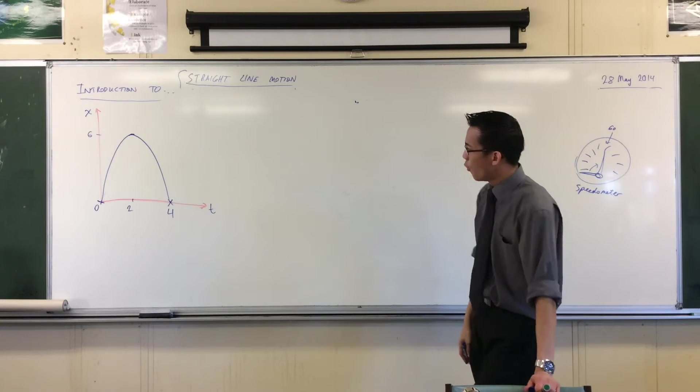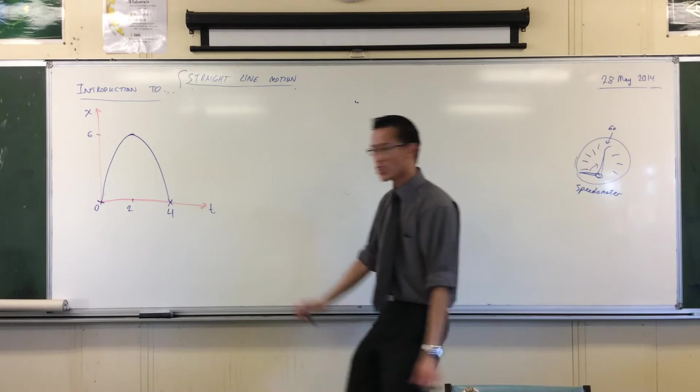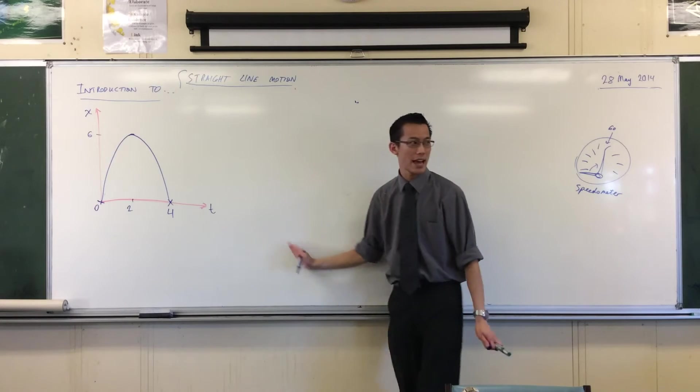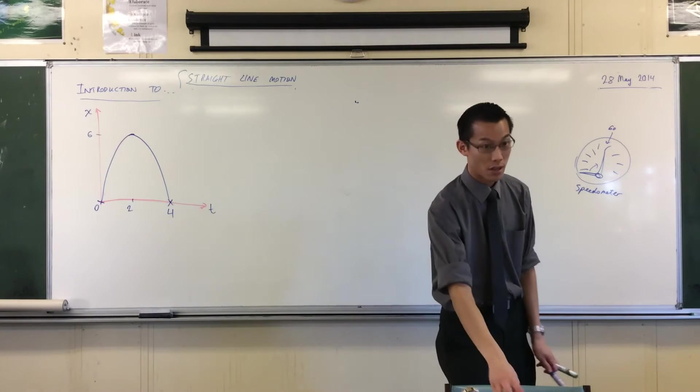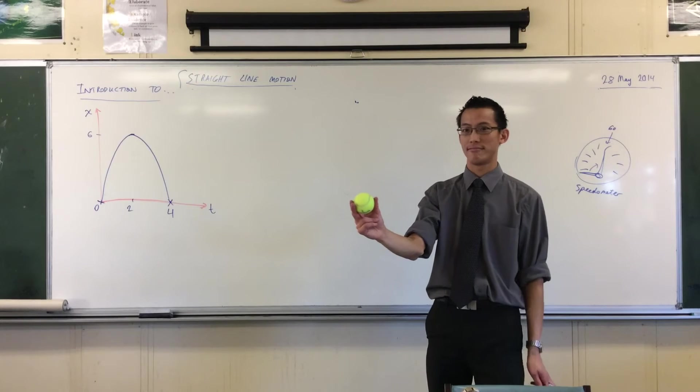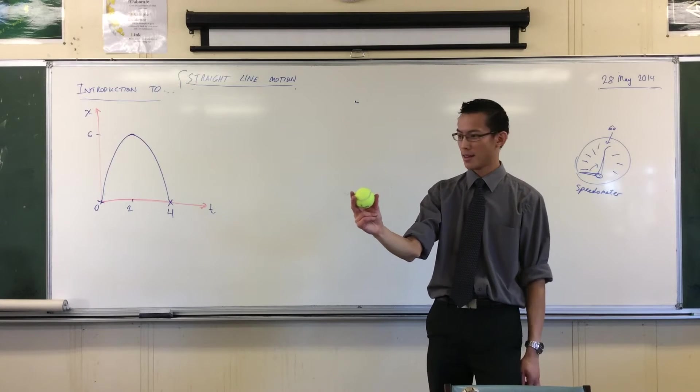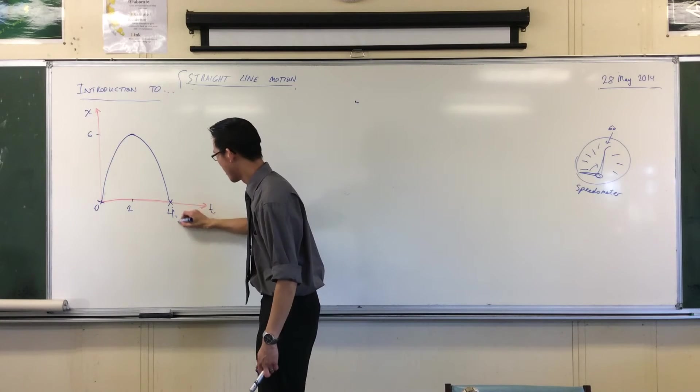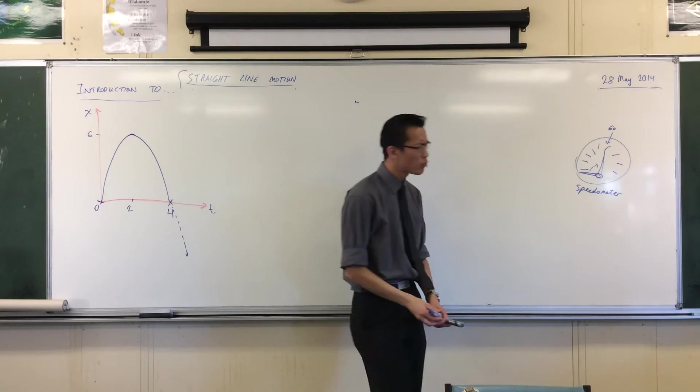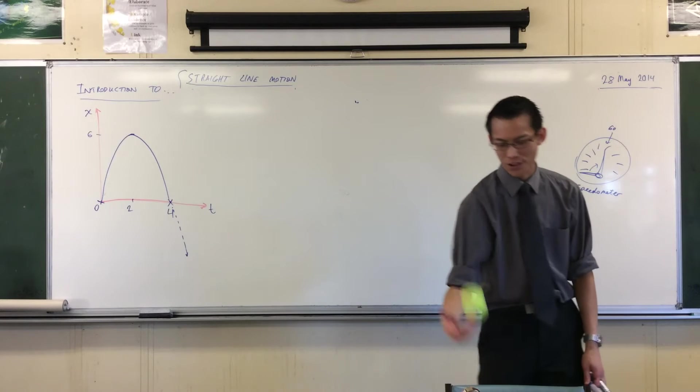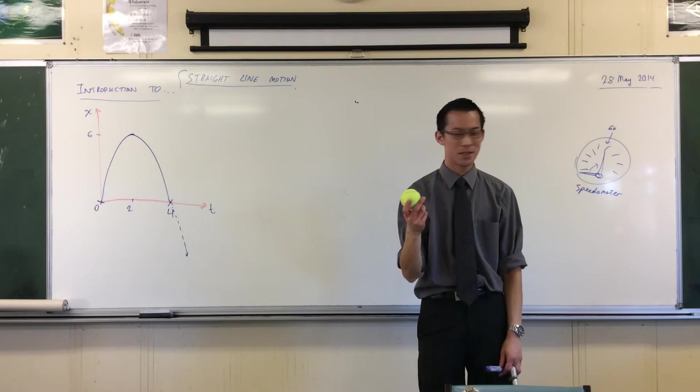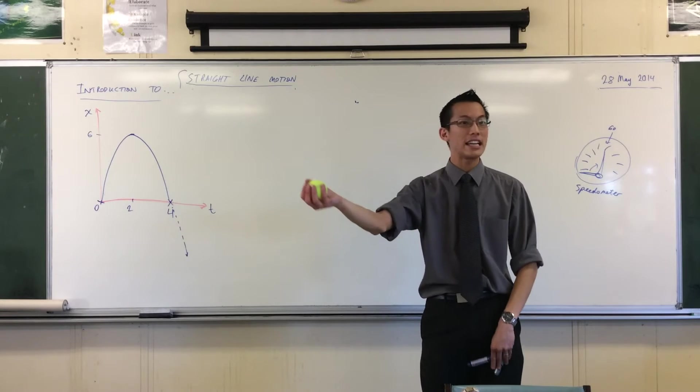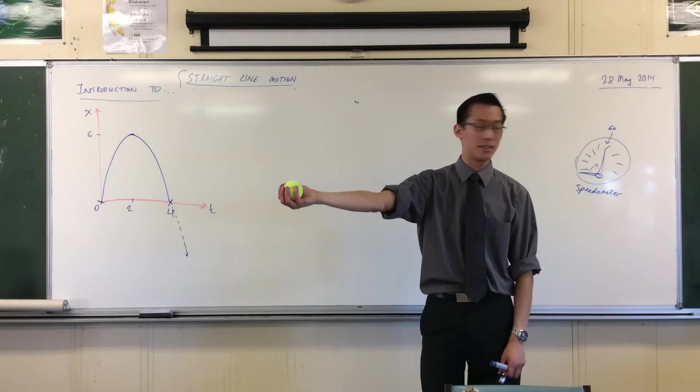Now, quick question. What happened as time went five, six, seven, eight? What was happening to the ball? It wasn't doing this. Even though, you know, actually I didn't drop the ball. Did I? I don't think I ever dropped it. So it was always, it never got any lower than the origin. My hand.